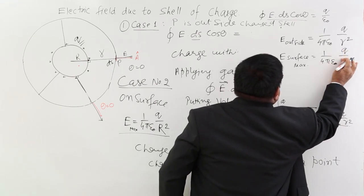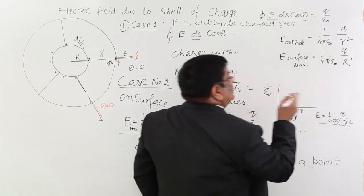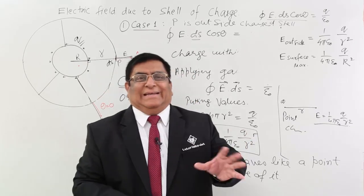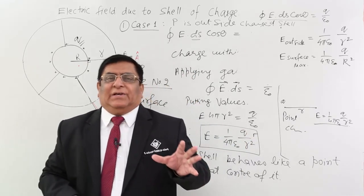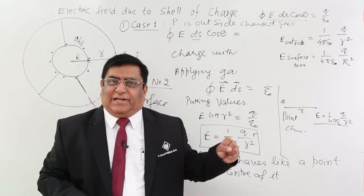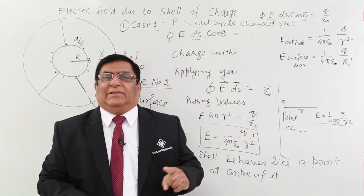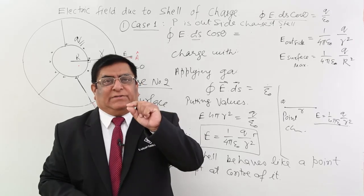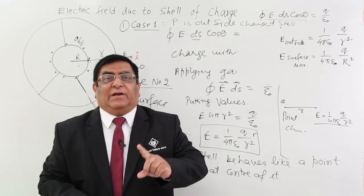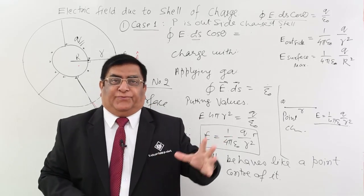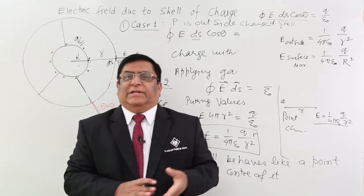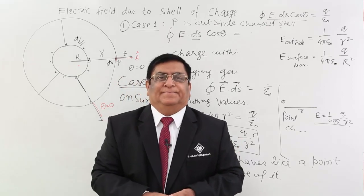On the surface, capital R is the minimum value of r. After that it will go inside. This is the minimum value of r so this E is the maximum value. For a charged sphere, the maximum value of the electric field is on the surface, equal to 1 upon 4 pi epsilon naught times Q upon R squared. Now what happens inside needs another derivation, which is very important, and we will do it in the next class.